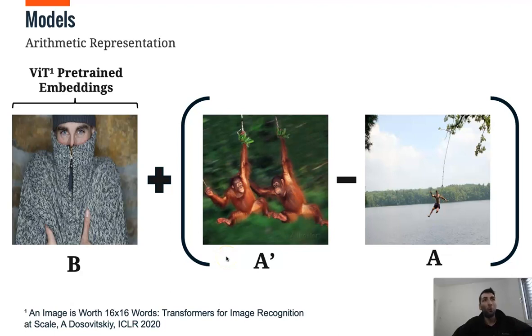Now let's see how models solve VASR. We experiment with arithmetic representation, which reminds the word to vec models, where we take pretrained embeddings and we do vector arithmetics. We do B plus A prime minus A.